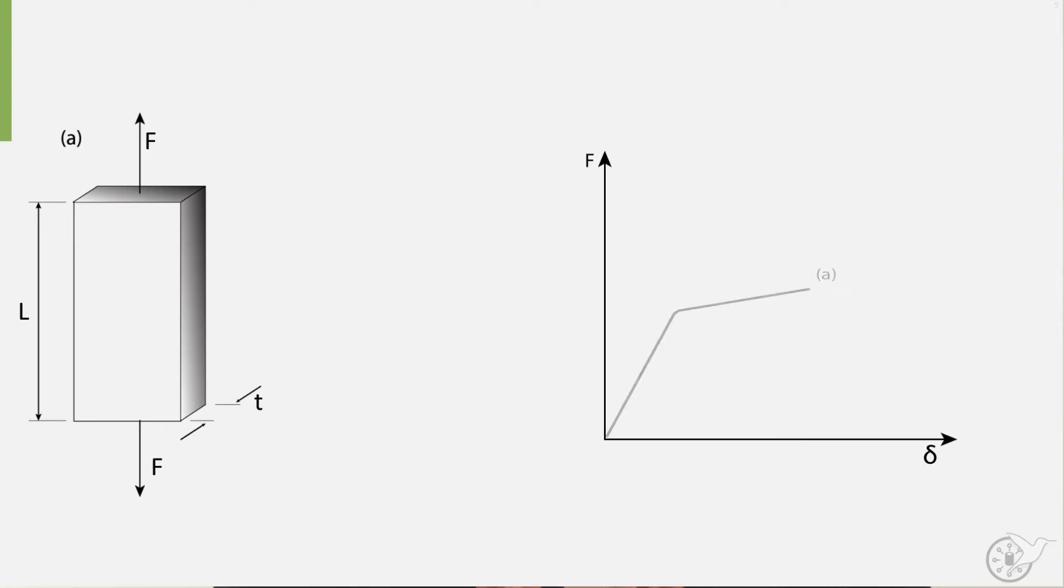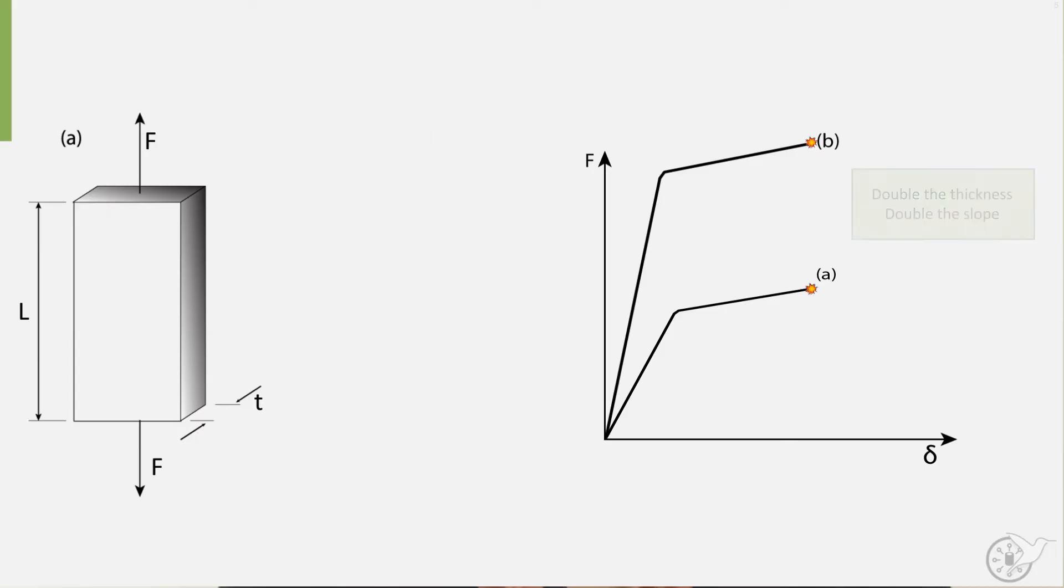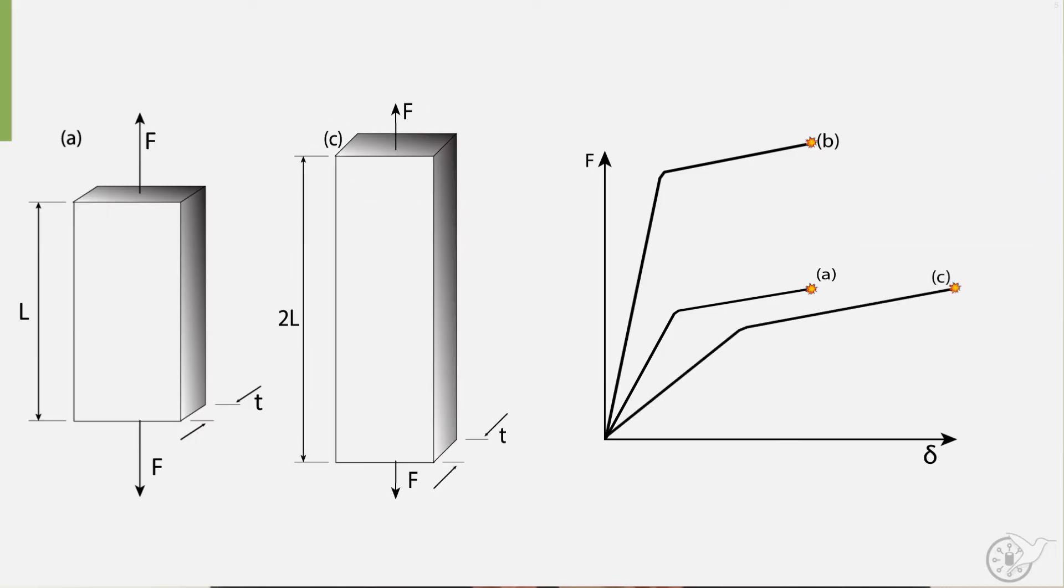For this beam, we can plot a force elongation diagram, as shown by line A, and in the same diagram, we have also plotted the diagram of a beam that is twice as thick, as shown in picture B. We see that the slope of this diagram is twice that of diagram A. If we also plot the force elongation diagram for the third beam, C, which is twice as long as beam A, we see that the curve is stretched twice as much.